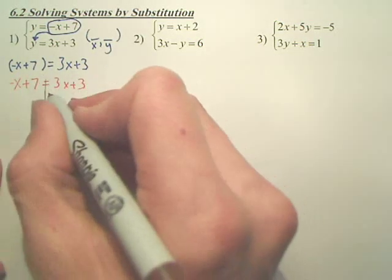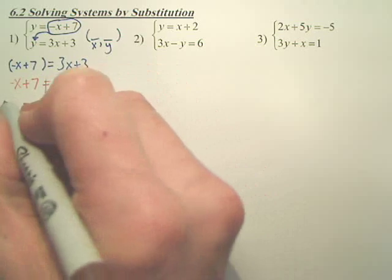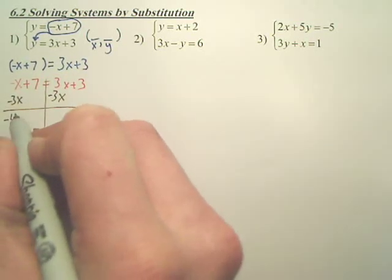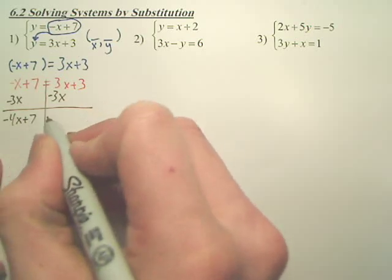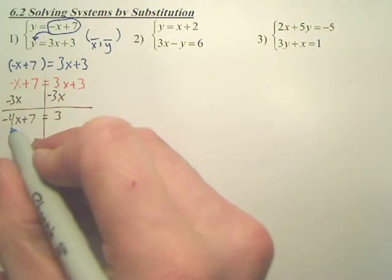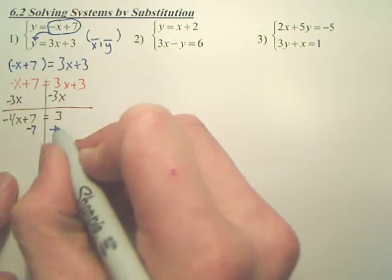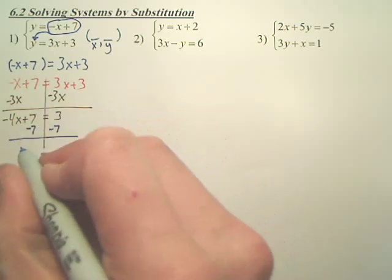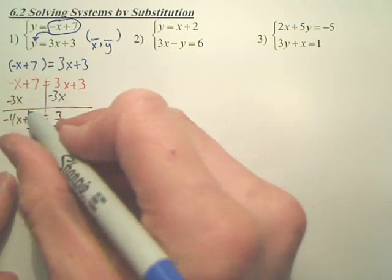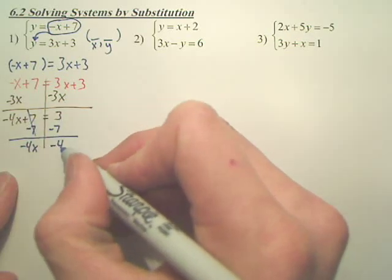I'm going to move the x's over here. So I'm going to minus the 3x over. That gives me negative 4x plus 7 equals 3. Then, how do you get the x by itself? You minus the 7 over.